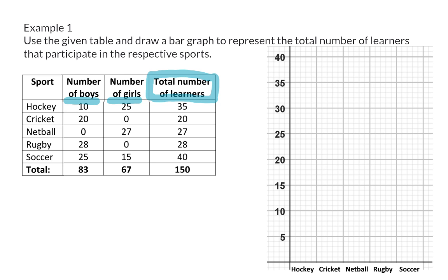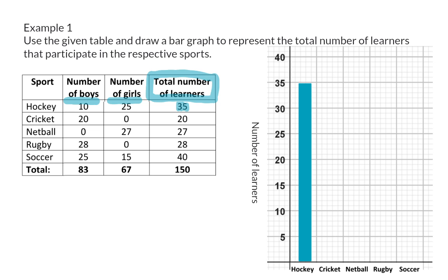On the grid or system of axes, the x-axis has already been named according to the different sports. We need to add a caption for the y-axis, and that will be the number of learners. Next, we need to add a bar to indicate the number of learners participating in each sport. Looking at the table, you will see that 35 learners participated in hockey, so our bar for hockey should go right up to 35 on the y-axis. Remember that there should be spaces between the bars, so don't fill the whole column with your bar.